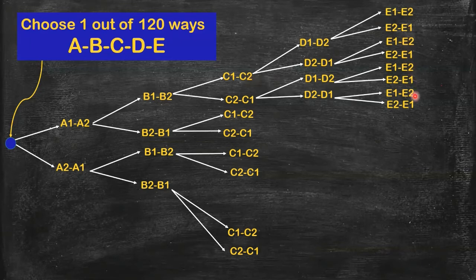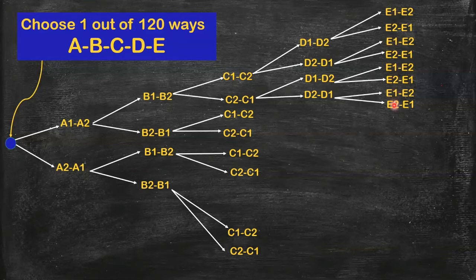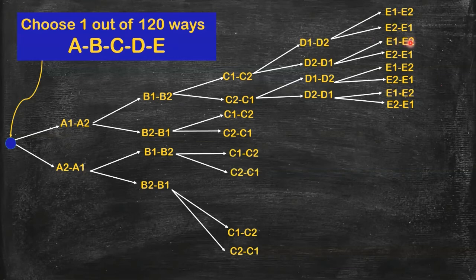So if you count from here - A1, A2, then B1, B2, then they branched out. You can see, if you count, you have I think 8: 1, 2, 3, 4, 5, 6, 7, 8. Eight outcomes here or 8 possible arrangements. So it's like A1, A2, B1, B2, C1, C2, D1, D2, E1, E2. That's one possible arrangement. Then go back here again. So A1, A2, B1, B2, C1, C2, this time D2, D1, and then E1, E2. That's another possible arrangement.